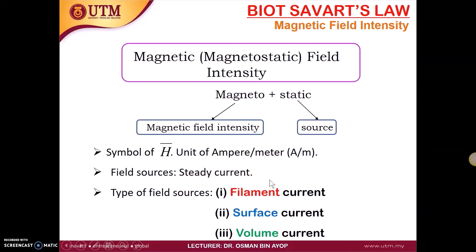Steady current means that the charge is flowing with a constant velocity, the magnitude is constant, and the direction is only one direction. Here we will learn the types of field sources: first, filament currents; second, surface current; and third, volume current.